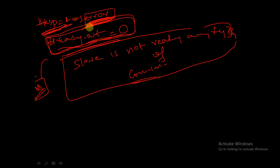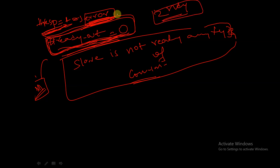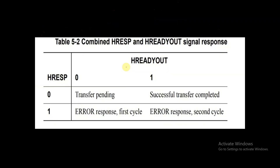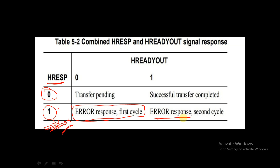In the 1st clock cycle, HREADYOUT will be equal to 0. In the 2nd clock cycle, HREADYOUT will be asserted to 1, indicating the completion of the transfer. So when HRESP is equal to 1, HREADYOUT equals 0 in the 1st error cycle, and in the 2nd cycle HREADYOUT equals 1.